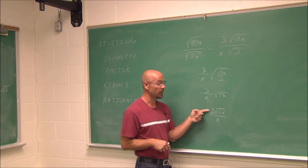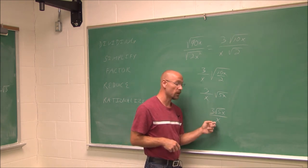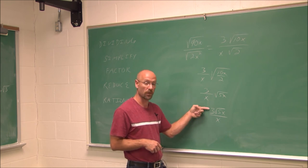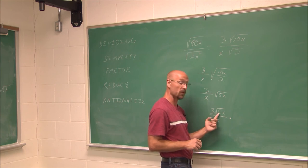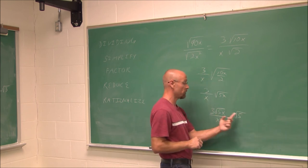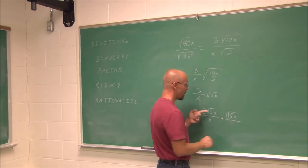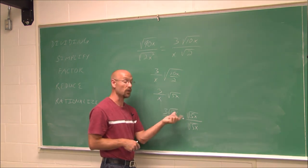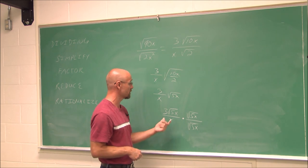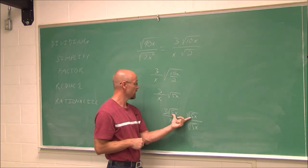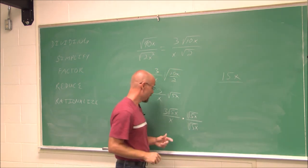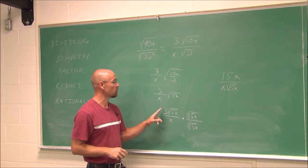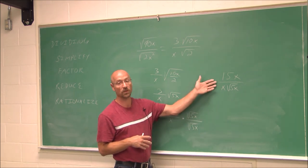But we may be asked to rationalize the numerator. We made the denominator a perfect power of the index — we can do the same thing to a numerator. I have the square root of 5x; I would need one more factor of 5 and one more factor of x to make it a perfect square. What I do to the top, I do to the bottom — we're multiplying by 1. So 3 times √(5x) times √(5x) gives 3 times 5x = 15x in the numerator. In the bottom we have x times the square root of 5x. So in this case, we've rationalized the numerator.